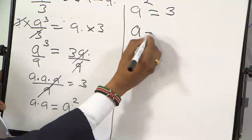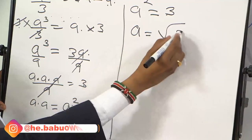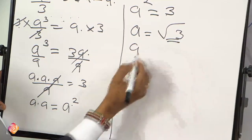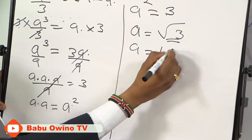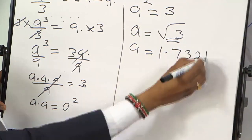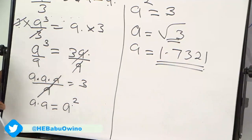If you want to find the value of A you find the square root of 3. So A is root 3 and the square root of 3 is 1.7321 from your calculator. That is the answer.